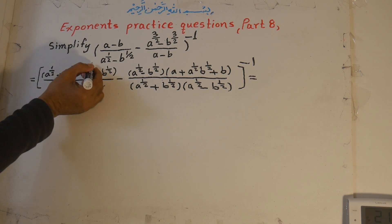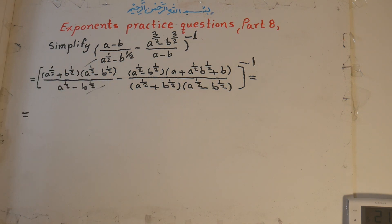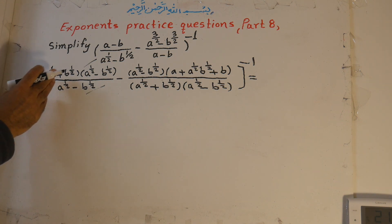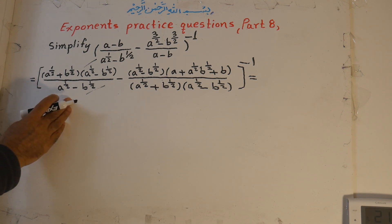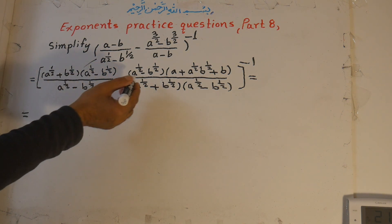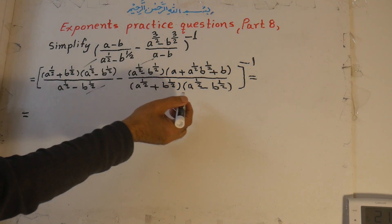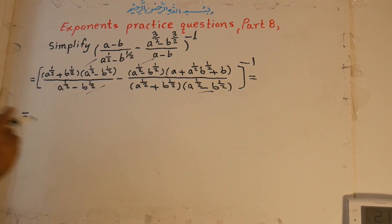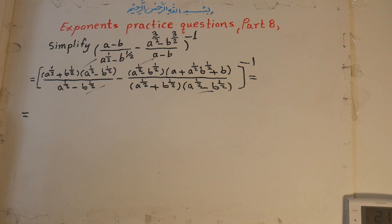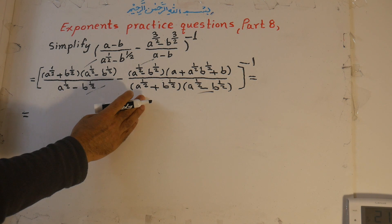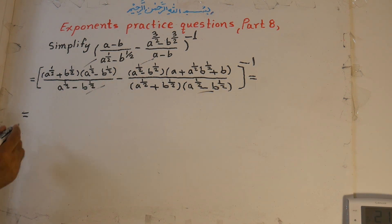The factor a to the power of 1/2 minus b to the power of 1/2 cancels. Remaining in the numerator: a to the power of 1/2 plus b to the power of 1/2, and in the other part, numerator remaining 1. This one cancels with this one, leaving numerator a, and a to the power of 1/2 plus b to the power of 1/2.